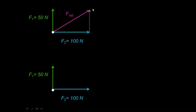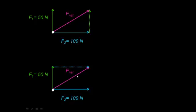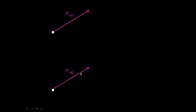Another way would be to take vector F2 and translate that upward to the tip of vector F1, and then the net force would go from the tail of F1 to the tip of F2. No matter which approach you use, the magnitude and direction of these two net force vectors are going to be the same — it doesn't matter the order in which we add up the vectors.